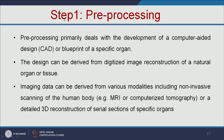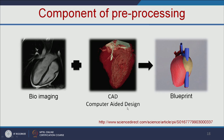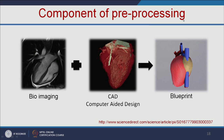Step 1 is preprocessing. Preprocessing primarily deals with the development of a computer-aided design — CAD — or blueprint of a specific organ. The design can be derived from digitized image reconstruction of a natural organ or tissue, and the imaging data can be obtained using MRI or CT scan of the particular organ. The first step is bioimaging of the organ, then using CAD you make the blueprint. This is the preprocessing step.